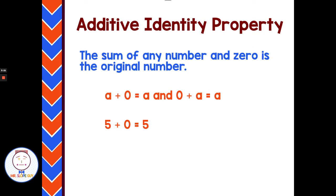The additive identity property has to do with adding 0. Whenever we add 0, we get back the same number we started with. We've known that forever, but didn't know it had a special name. A plus 0 equals A, or 5 plus 0 equals 5. Adding 0 gives you the same identical number you started with — that's the additive identity property.